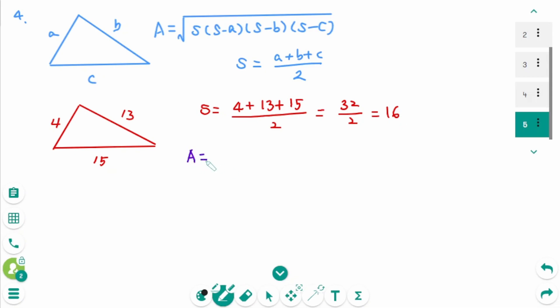Then area equals square root of S times, which is 16, times S minus A, 16 minus 4, times S minus B, 16 minus 13, times S minus C, 16 minus 15.